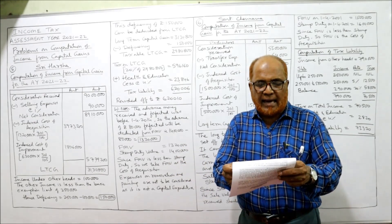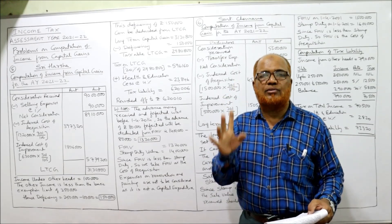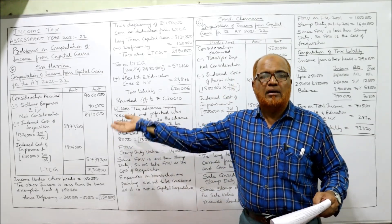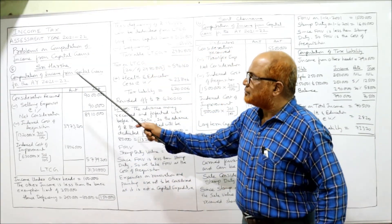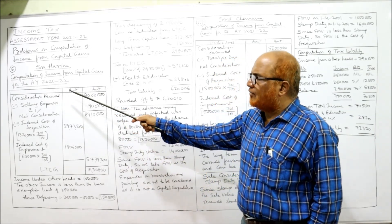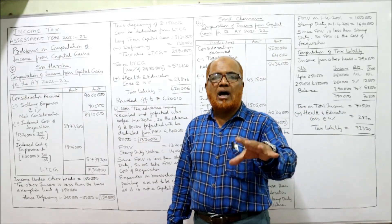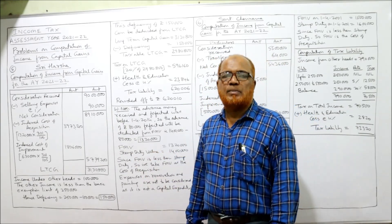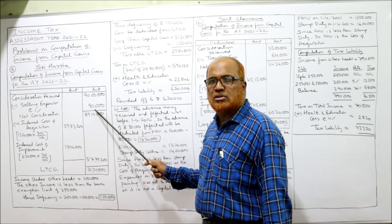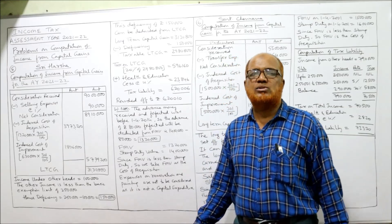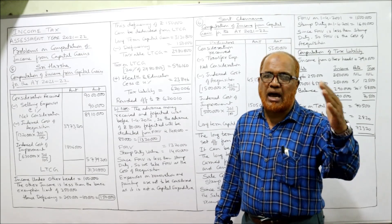Calculate the income from capital gain and tax liability if the income from other heads is Rs. 1 lakh. Apart from capital gain, they have other income of Rs. 1 lakh. We have to compute the tax liability. For the assessment year 2021-22: consideration received is Rs. 90 lakh. Minus selling expenses — 1% of Rs. 90 lakh is Rs. 90,000. So the net consideration is Rs. 89,10,000. From this we have to deduct indexed cost of acquisition and indexed cost of improvement.